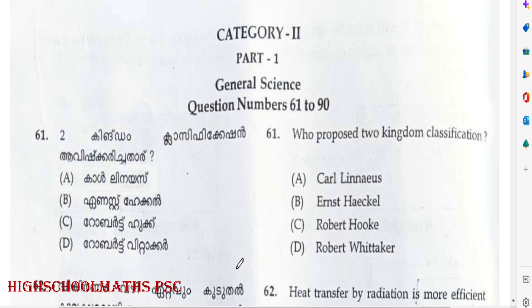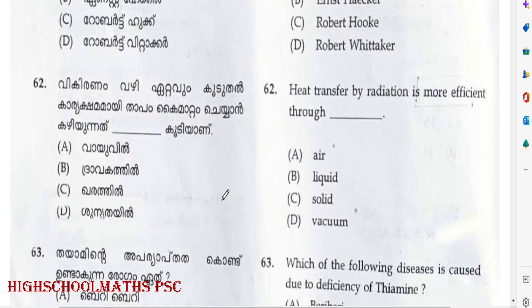Question: Who proposed the two kingdom classification? Answer: Option A — Linnaeus. The two kingdom classification was proposed by Carolus Linnaeus.